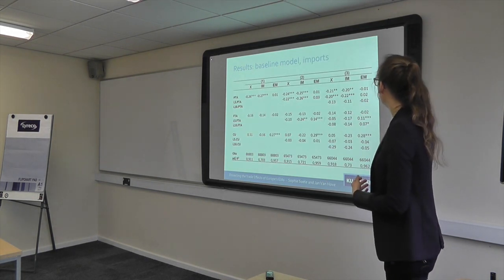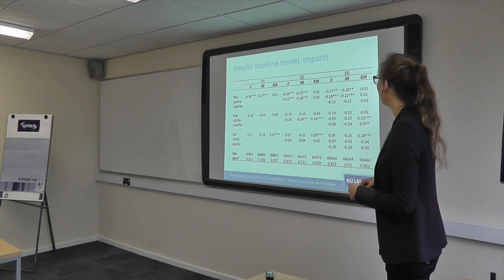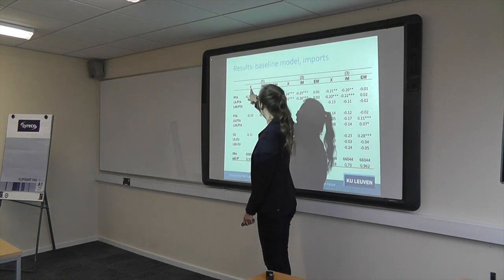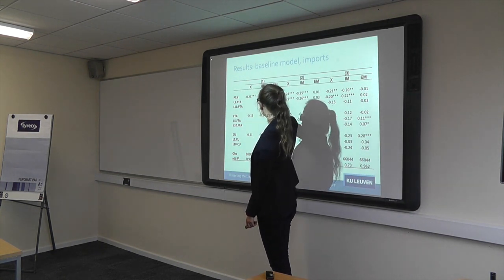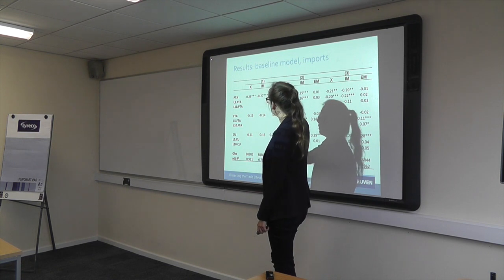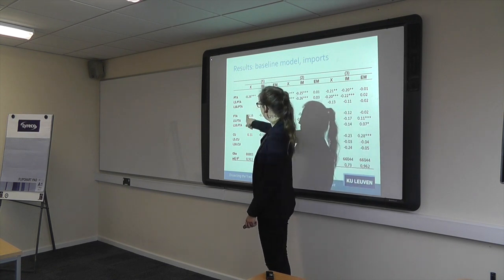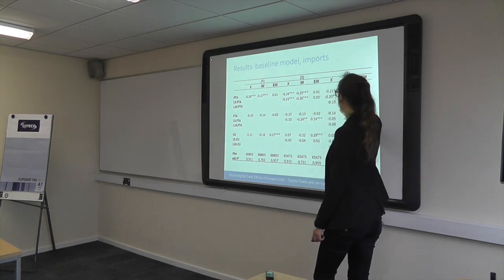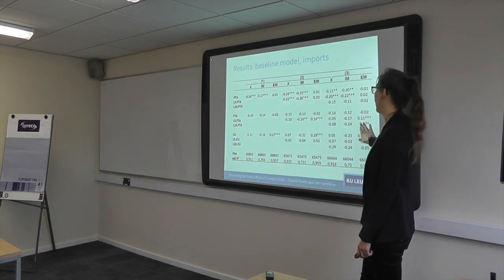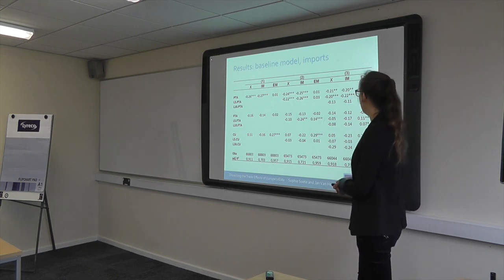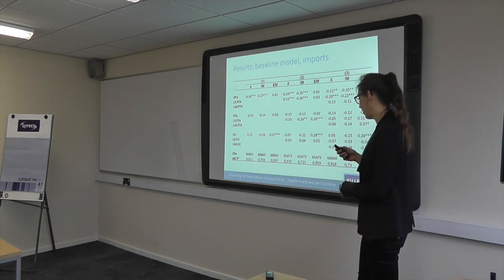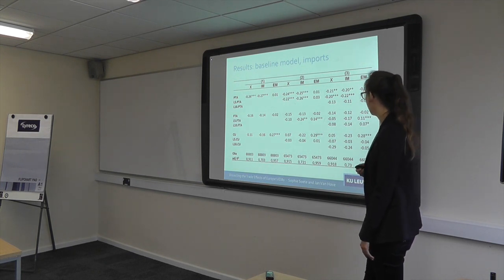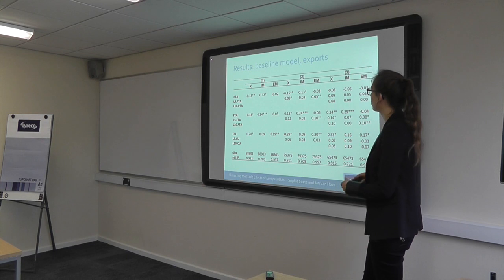Here are the numbers of the baseline model. The columns show the effect on total trade, the intensive margin, and the extensive margin — for PTAs, FTAs, and customs unions. Then we add 5-year lags, and then 5-year and 10-year lags. This is for imports, and then separately for exports. We see, for example, that customs unions have an effect mostly driven by the extensive margin.